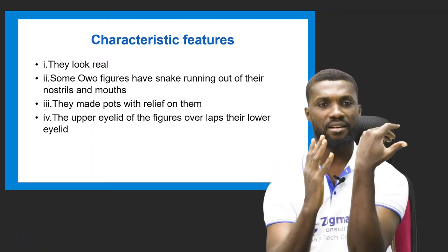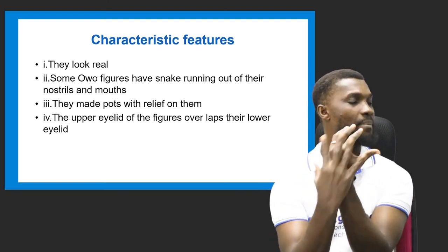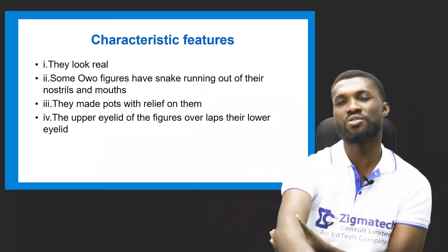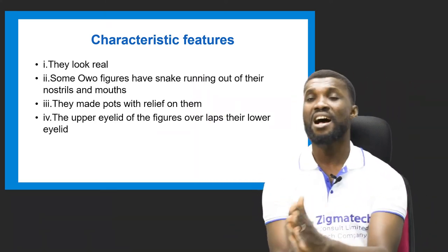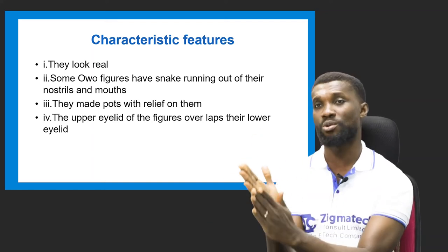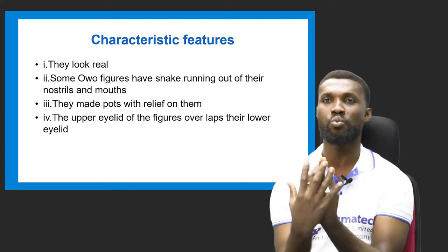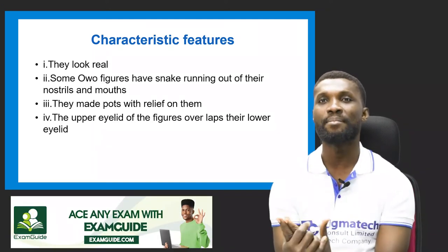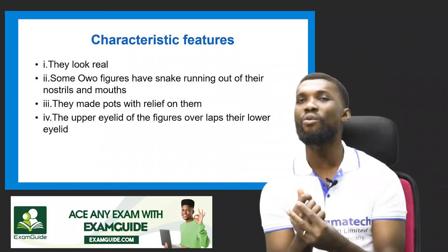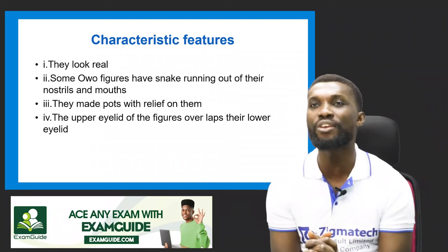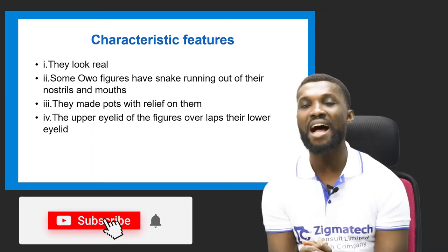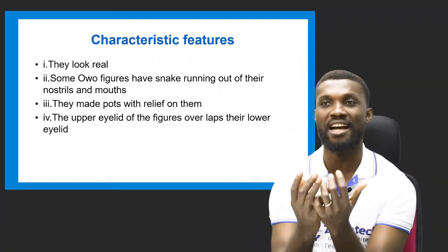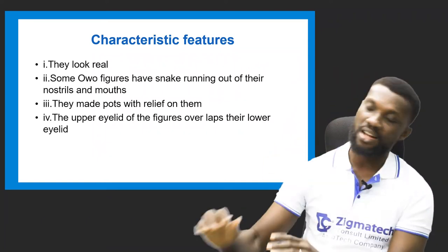Third, they make pots with relief designs on them. Relief refers to embossed work done on a background that projects outward. There are two types of relief: low relief and high relief. Fourth — the fifth characteristic — the upper eyelid of the figures overlaps the lower eyelid, giving them bulky, projecting eyes that try to tell a story.